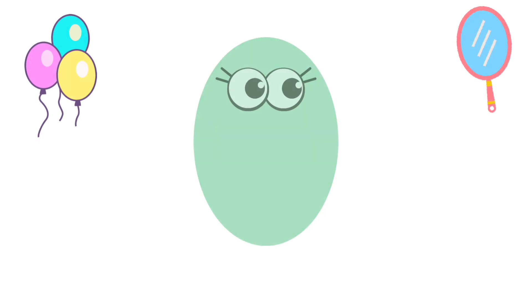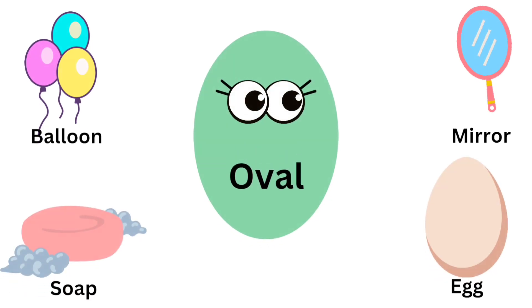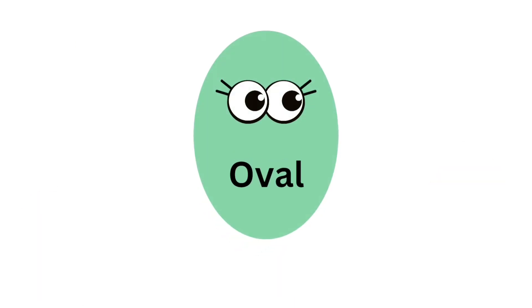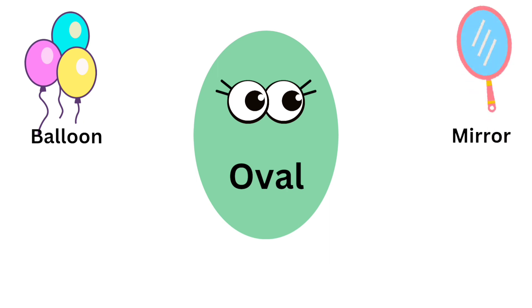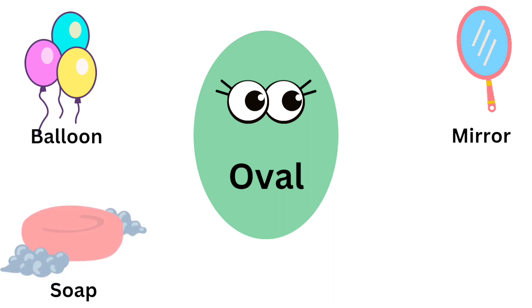Oval shape — now look at some objects which are in oval shape: balloons, mirror, soap, egg.